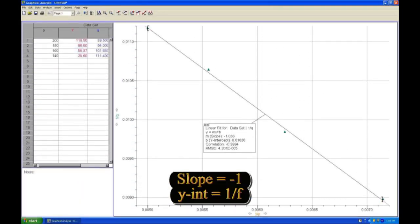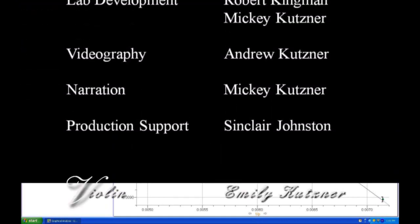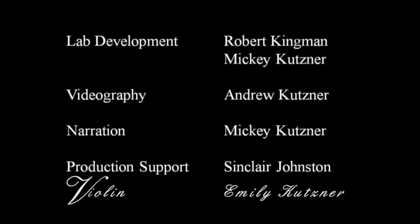A plot of 1 over Q versus 1 over P should again be a straight line with a slope of negative 1 and a y-intercept equal to the inverse of the focal length of the mirror.